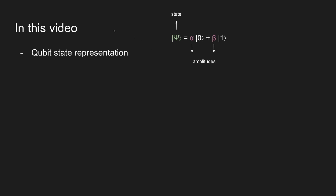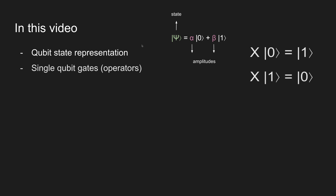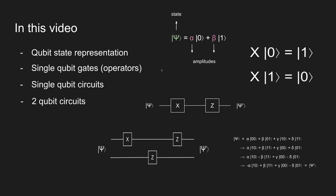In this video we're going to go over the basics of quantum circuits. We're going to look into the very basics of qubit state representations, we're going to learn about qubit gates — these are what we call the operators in qubit quantum circuits — and then we're going to look into a very simple quantum circuit with just one qubit.